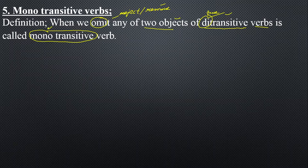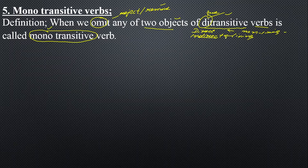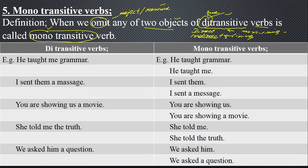In mono transitive verbs, we omit one of the objects from di-transitive verbs, and that becomes mono transitive. Di-transitive verbs need two objects: one is known as the indirect object, which refers to living things, and the direct object, which refers to non-living things. When you omit one of them, your verb changes into mono transitive. Now we will discuss examples.